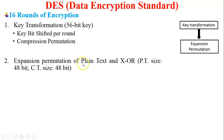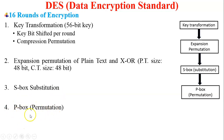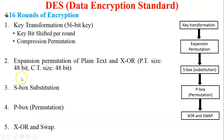The second step is expansion permutation of the plain text and XOR. Plain text size is 48 bits and key size is 48 bits after expansion. We have 32-bit RPT and LPT, and RPT is converted into 48 bits because the key size is compressed to 48 bits from the 56-bit key. Then S-Box substitution converts the 48-bit plain text back into 32-bit plain text. Then P-Box permutation, followed by XOR and swap. These 5 steps are performed in the 16 rounds of encryption.